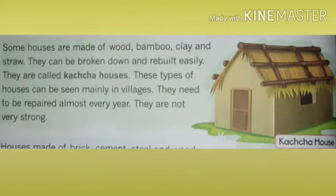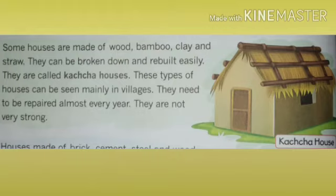Now we will study different types of houses. Some houses are made of wood, bamboo, clay, and straw. They can be broken down and rebuilt easily. They are called kacha houses. These types of houses can be seen mainly in villages. They need to be repaired almost every year and are not very strong. As you see in the picture, it is a kacha house.